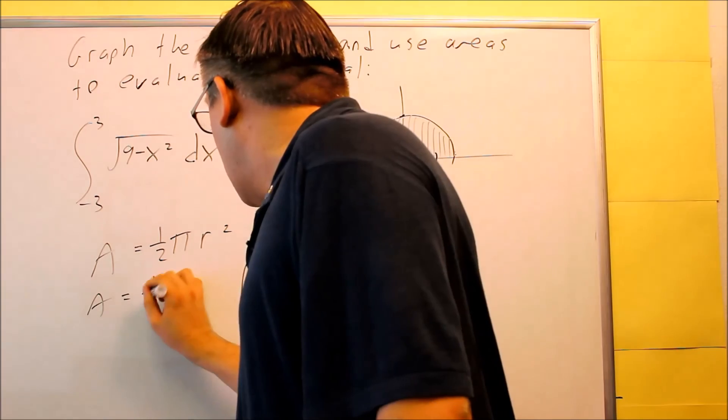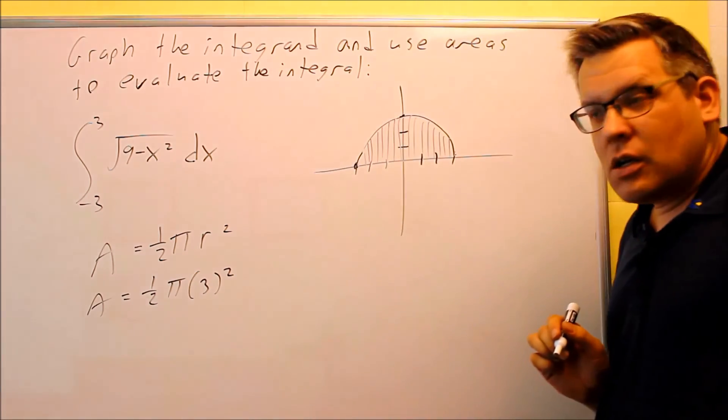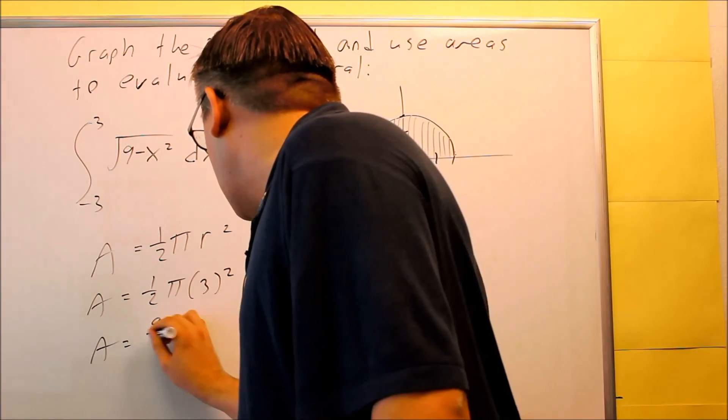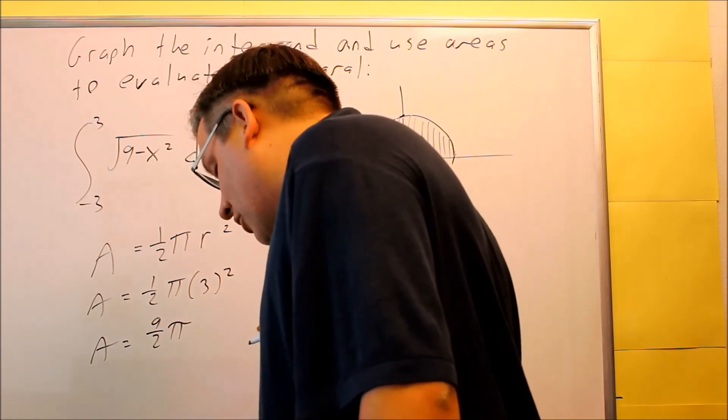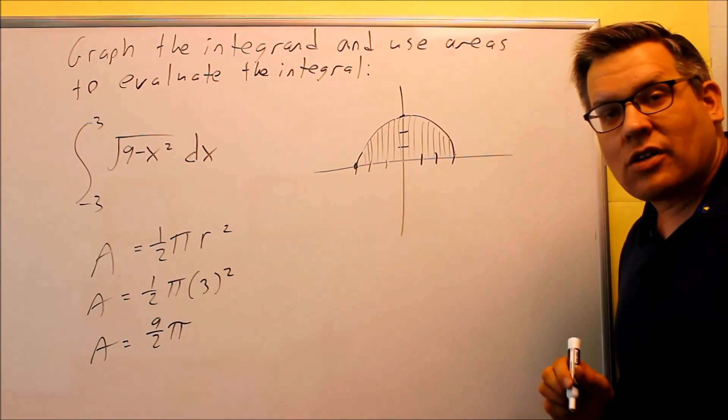So when I put that in, I get one-half pi times 3 squared. And I'm going to work that out. My exact area is going to be nine-halves pi, and you could leave it like that or convert to a decimal if you want to, but that would be the exact area.